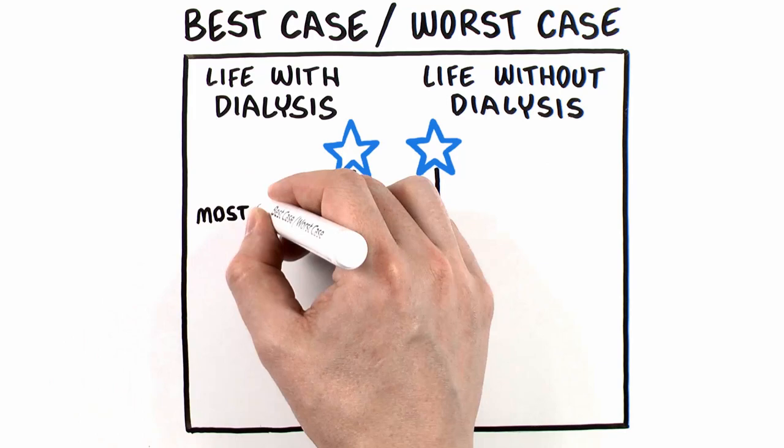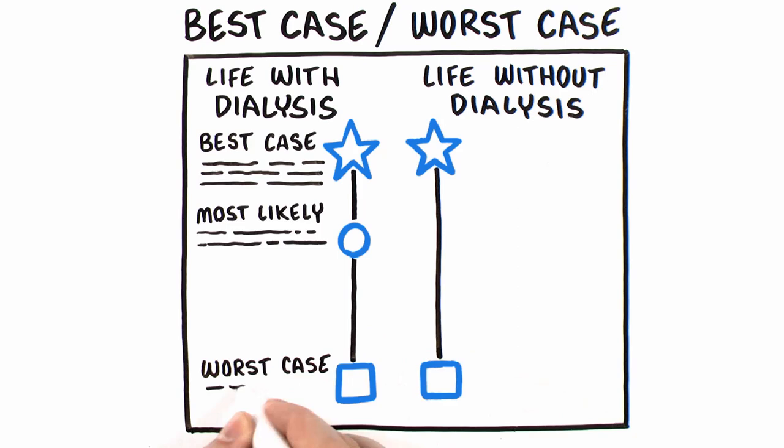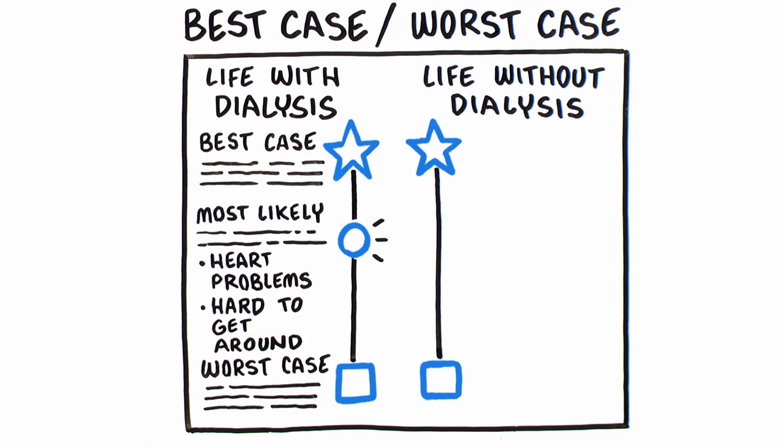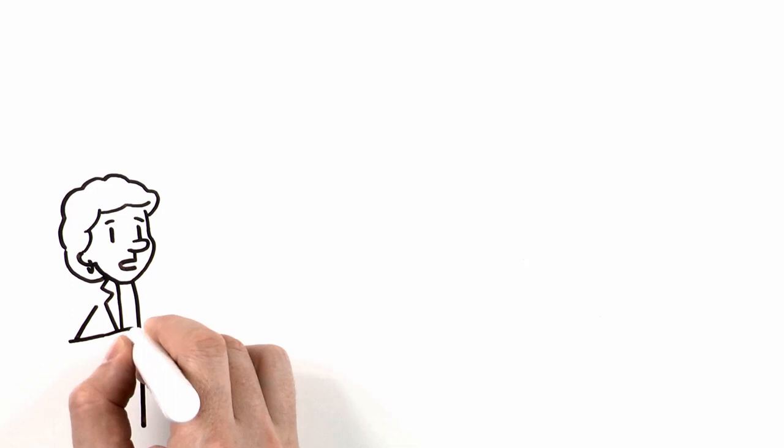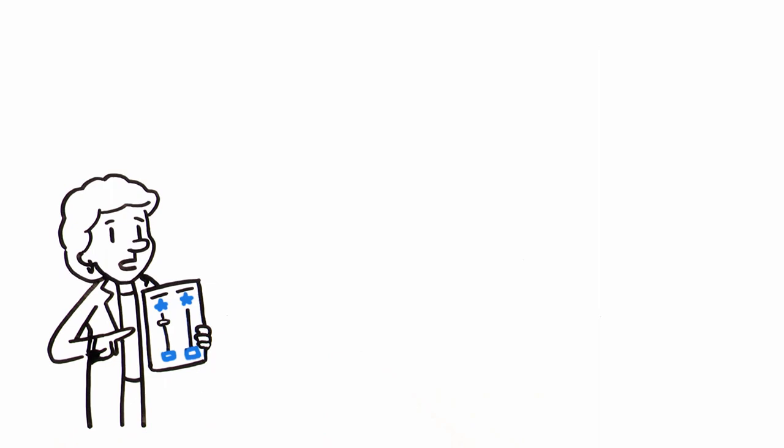Now let's talk about the most likely scenario. To illustrate, put a mark somewhere along the line to indicate its relation to the best and worst case. For Gladys, it's probably somewhere in the middle. It's important to acknowledge her baseline health and note that dialysis will not correct her underlying heart failure or declining mobility. Keeping this in mind, you could say something like,